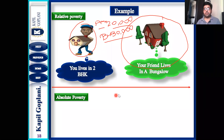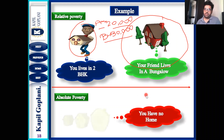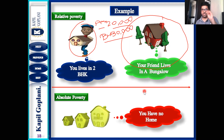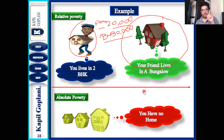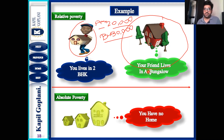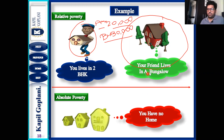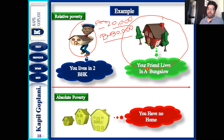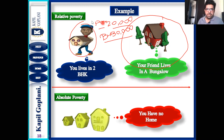For absolute poverty, the criterion is that you do not have any house at all. Among the five basic necessities, one is housing. If that one necessity is gone, that person will be considered absolutely poor. That is the major criteria of absolute poverty.